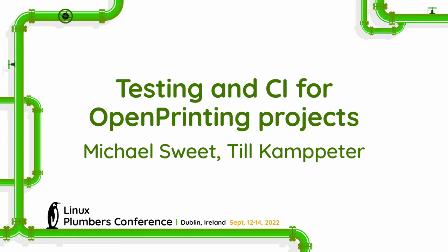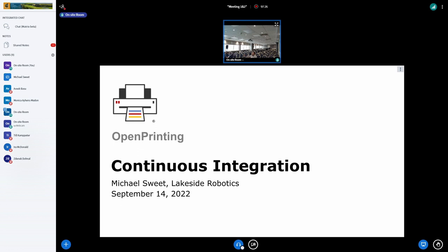Thank you for fixing that so we can continue with the second session on continuous integration. In OpenPrinting, I've done a lot of coding. We worked with Google Summer of Code contributors between 2006 and 2008. At the first printing summit I organized, we announced the switch to the PDF-based print workflow. We had contributors make a lot of filters, then more contributors added CUPS filters and other parts — but we did not really invest time in automatic testing.